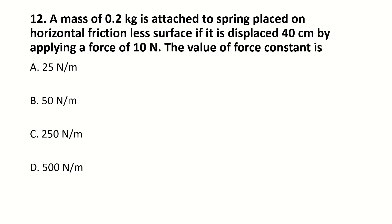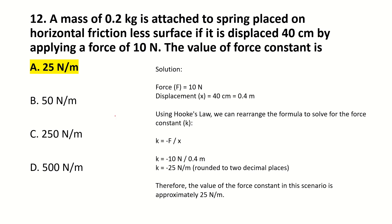A mass of 0.2 kg is attached to a spring placed on horizontal frictionless surface. If it is displaced 40 cm by applying a force of 10 N, the value of force constant is dash. So, its formula is K equals minus F upon X. Now, displacement is in centimeter. So we will convert it to meter first.